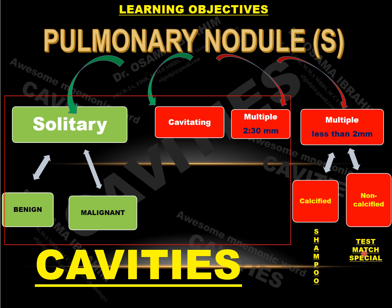For non-calcified pulmonary nodules less than two millimeters, 'TEST MATCH SPECIALS' covers military TB, military metastasis, sarcoidosis, and simple silicosis. Today I will talk about solitary pulmonary nodules, cavitating lung nodules, and multiple pulmonary nodules more than two millimeters up to three centimeters. The mnemonic word 'CAVITIES' can generate the list of differential diagnoses for all of this lung pathology.